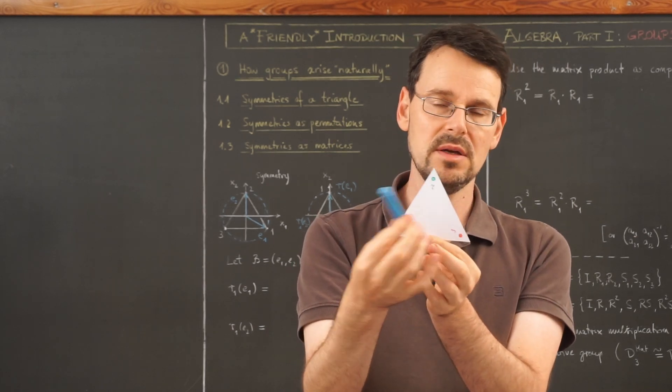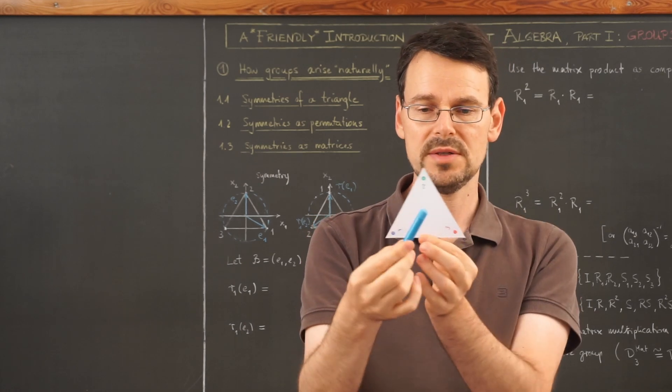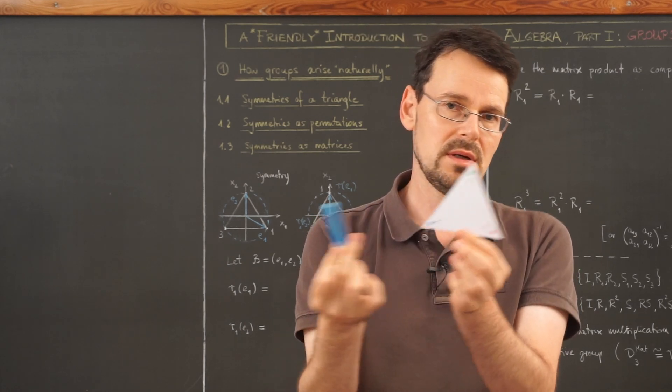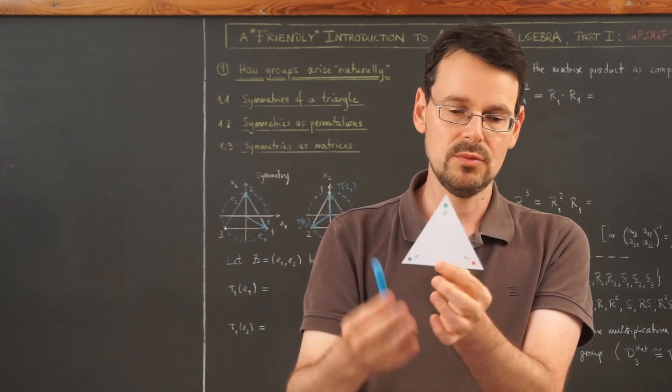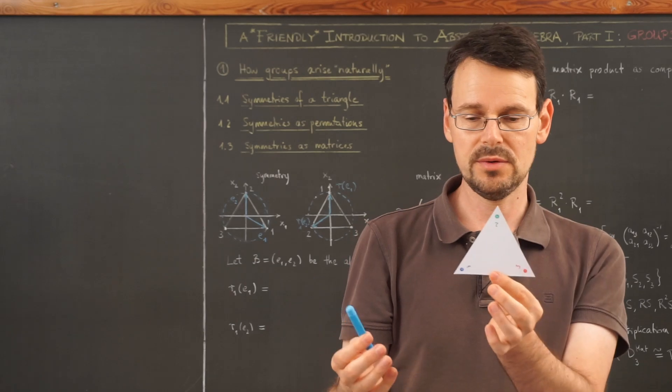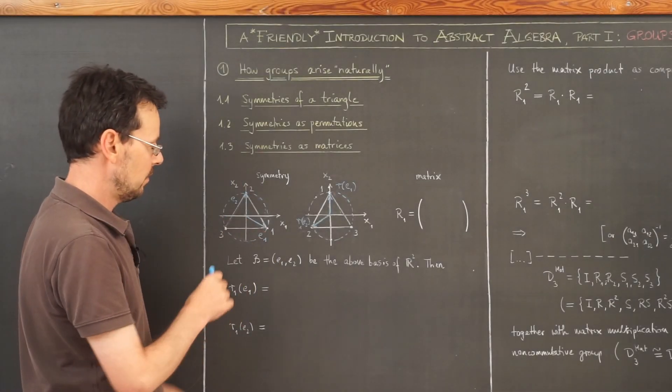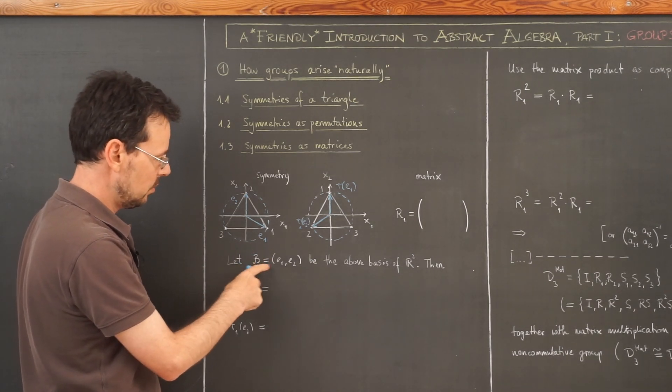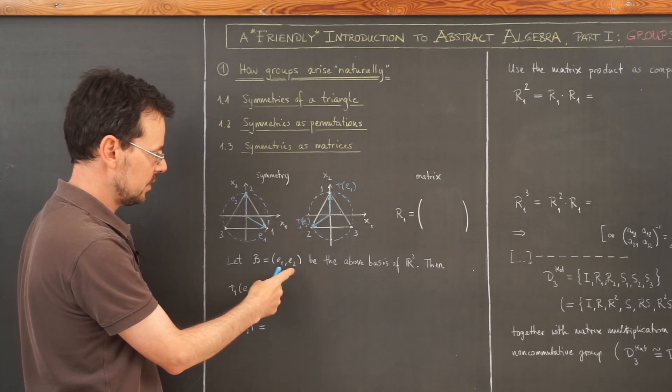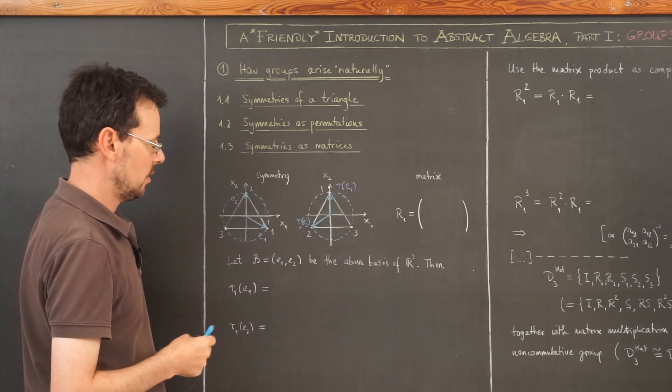Then this is clearly also a basis of R2, because those two vectors are clearly linearly independent and two linearly independent vectors in R2. So they are a basis. This is what we have here. Script B is the basis consisting of these two vectors.